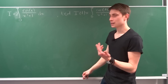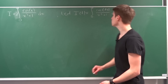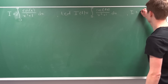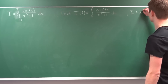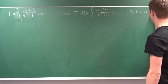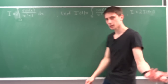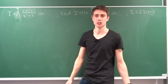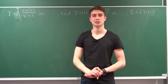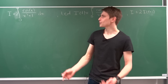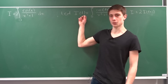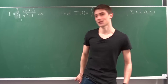So our original I is just two times I(t) evaluated at t equals 1. That's our relationship here, and it's going to help us. Now we want to apply the Laplace transform to this time-dependent function.